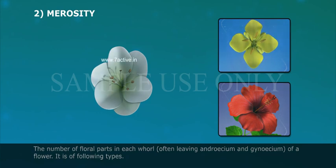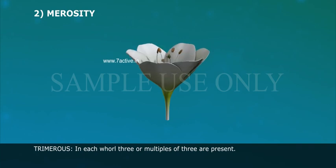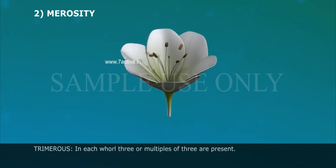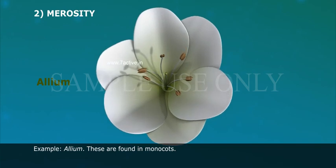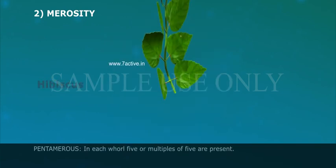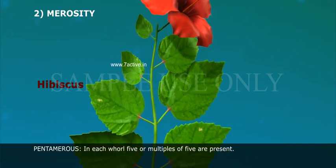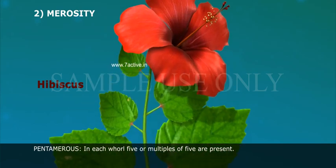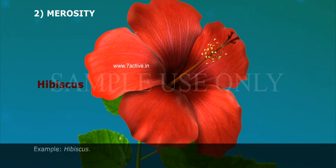It is of the following types. Trimerous: in each whorl, three or multiples of three are present. Example: allium. These are found in monocots. Pentamerous: in each whorl, five or multiples of five are present. Example: hibiscus.